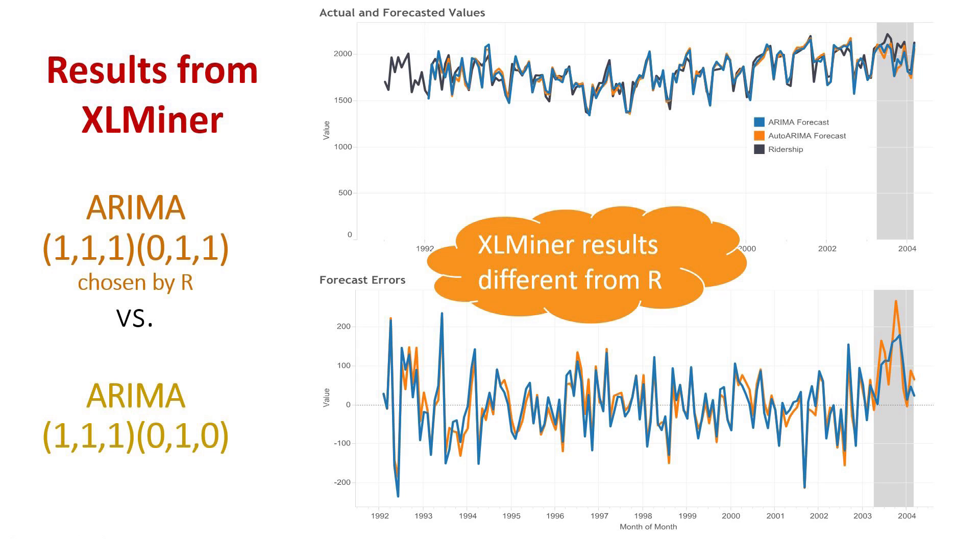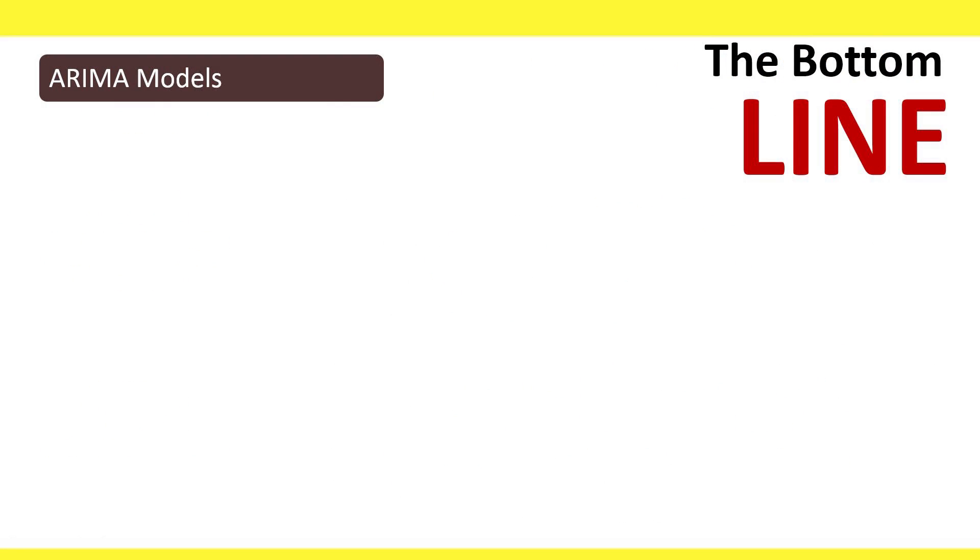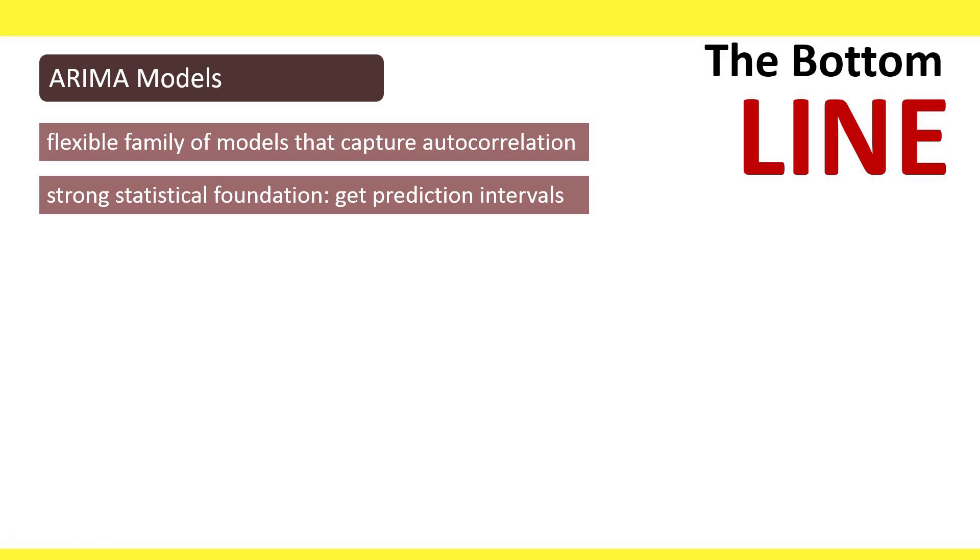To summarize ARIMA models, this is a flexible family of models that capture autocorrelation in all kinds of forms. It has a strong statistical foundation, and therefore it's easy to get automated prediction intervals.